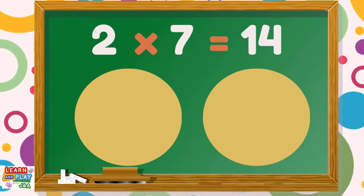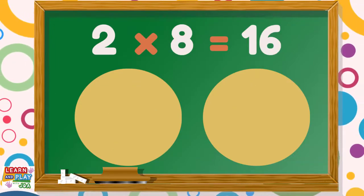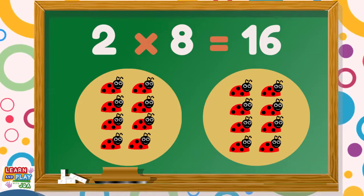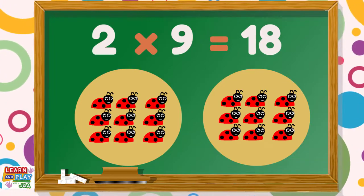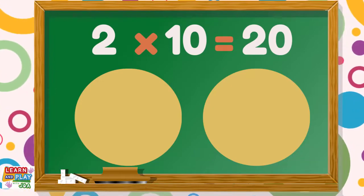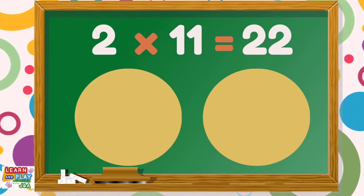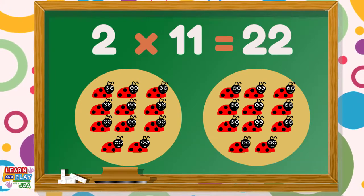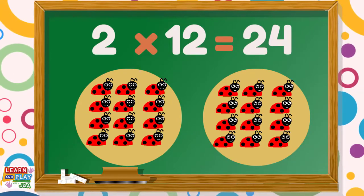2 times 7 is 14. 2 times 8 is 16. 2 times 9 is 18. 2 times 10 is 20. 2 times 11 is 22. 2 times 12 is 24.